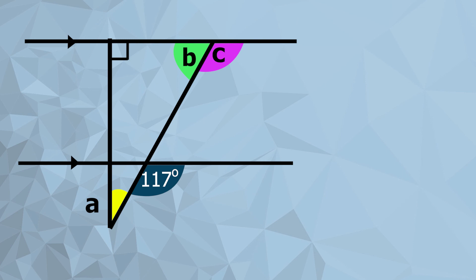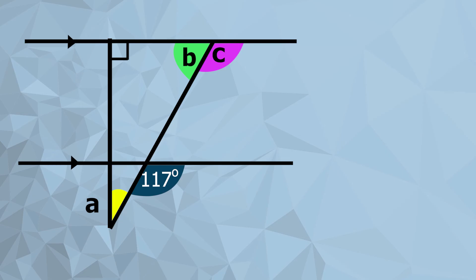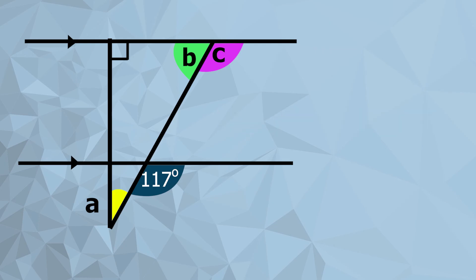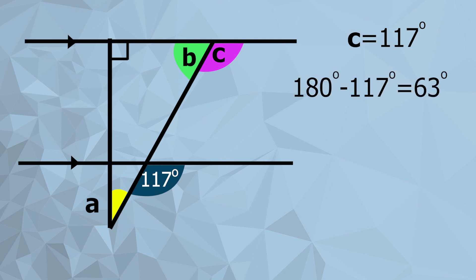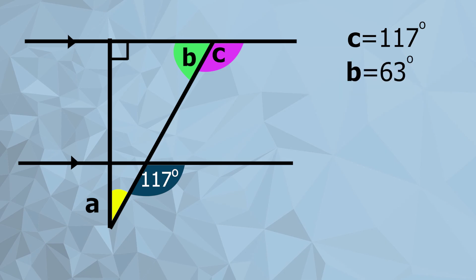In this final question we have three missing angles to work out. I can see that angle C is going to be equal to the given angle — it's on the same side of the diagonal line and in the same relative position, so that's a corresponding angle. C is 117 degrees because it's a corresponding angle. From that, we've got a straight line so they add up to 180 degrees — 180 take away 117 leaves us with 63. Angle B is 63 degrees.